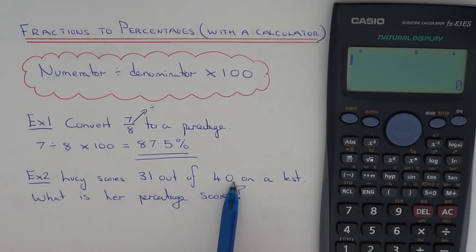So first of all let's write 31 out of 40 as a fraction. So again just remember that line means divide.